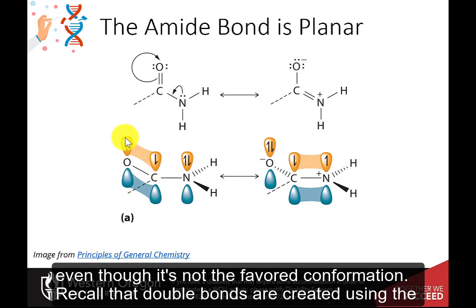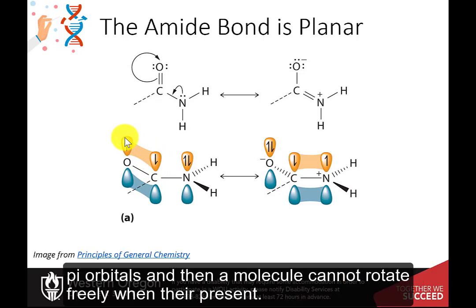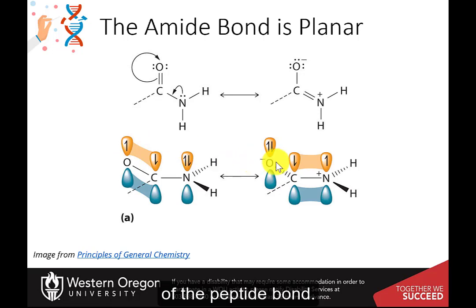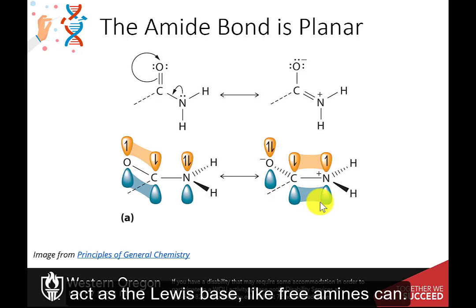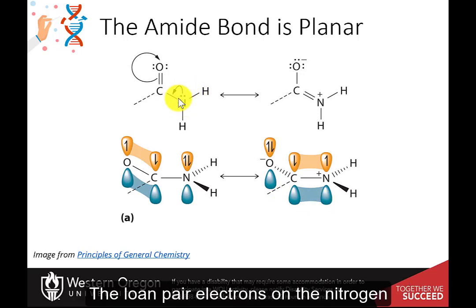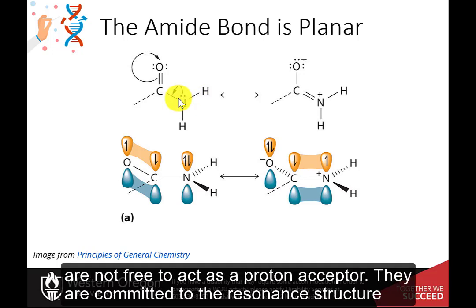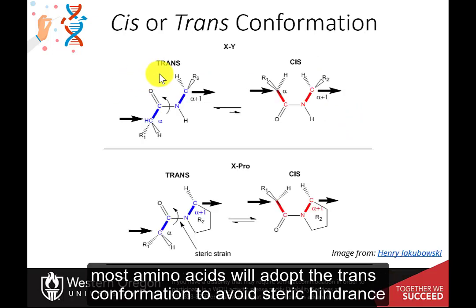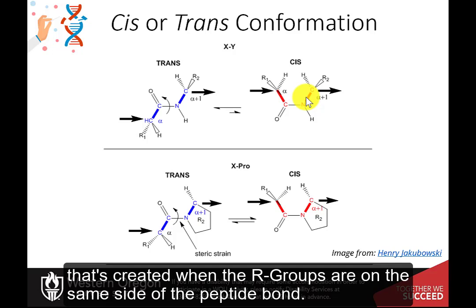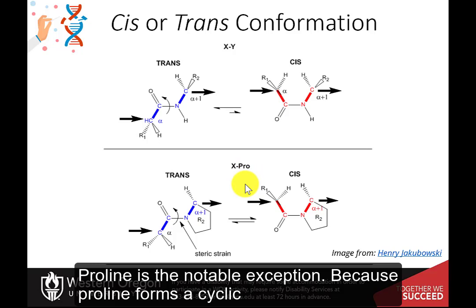Recall that double bonds are created using the pi orbitals, and that a molecule cannot rotate freely when they are present. This creates a fixed planar nature of the peptide bond. Note that the resonance structure of the amide bond is also the reason that the amide cannot act as a Lewis base like free amines can. The lone pair electrons on the nitrogen are not free to act as a proton acceptor; they are committed to the resonance structure and double bond formation with the carbonyl carbon. Most amino acids will adopt the trans conformation to avoid steric hindrance created when the R groups are on the same side of the peptide bond. Proline is the notable exception.